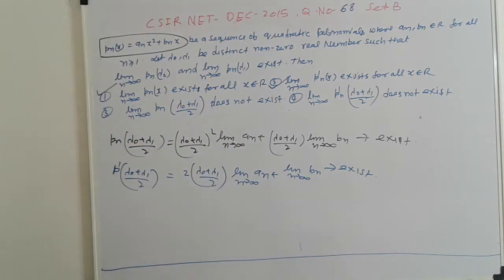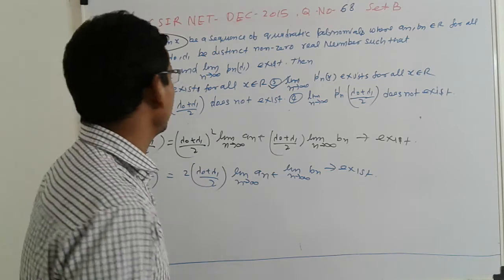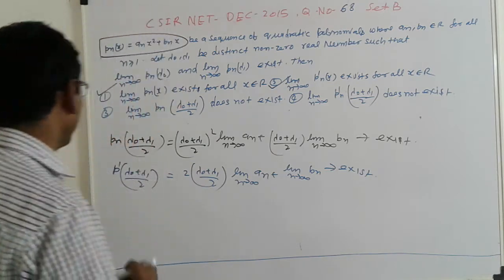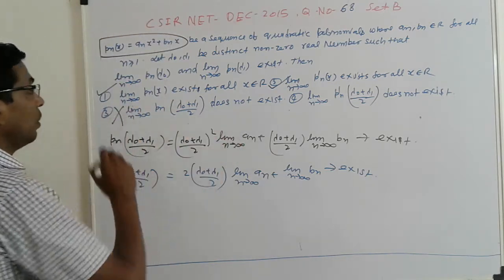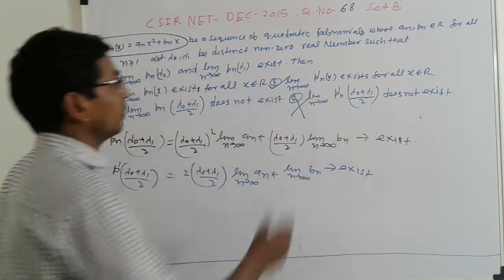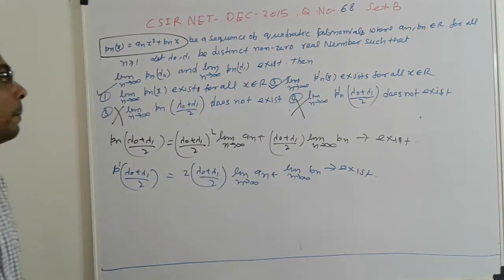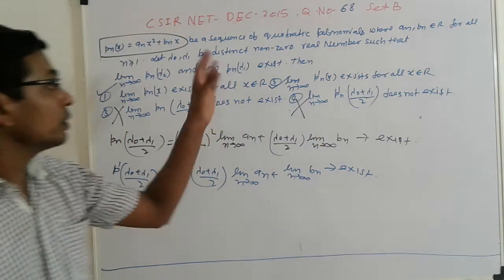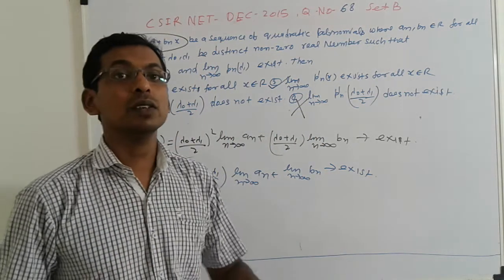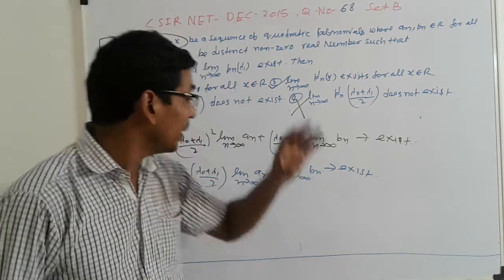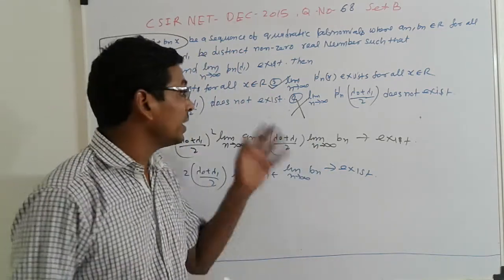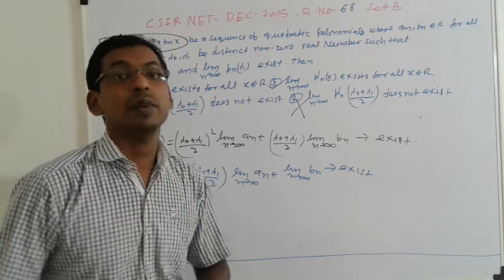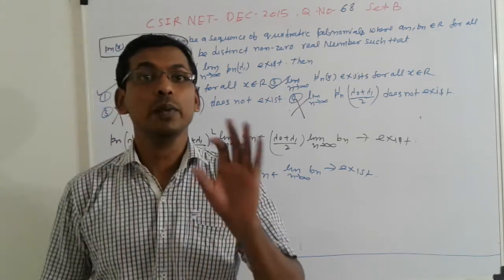So checking what the question says 'does not exist' is wrong — all the options with limits existing are satisfied. This sort of problem is solved. Thank you.